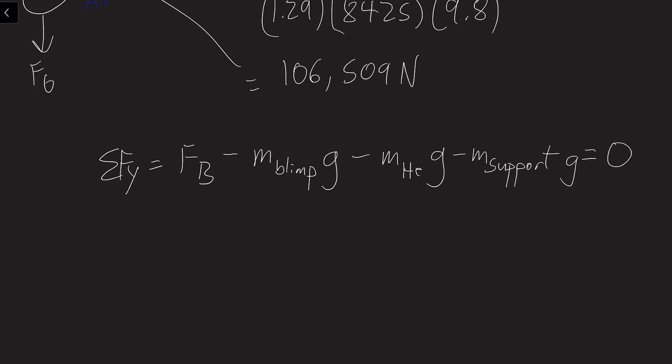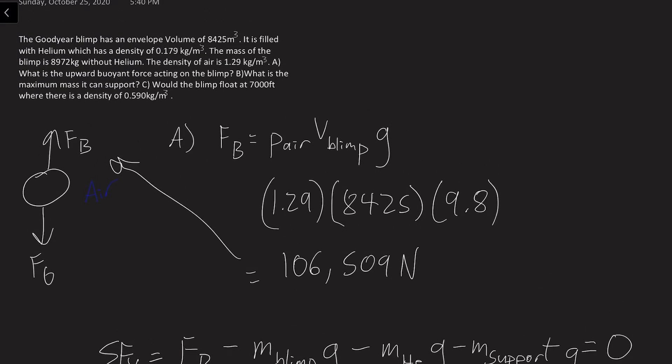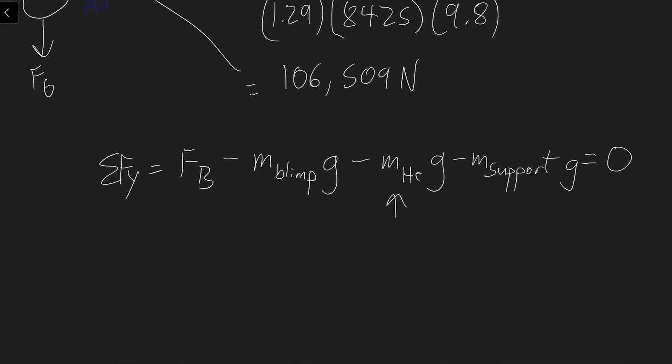So then, we don't know the mass of helium. We do not know this. It is not given in the problem up here. We can find it using the density equation. Density of helium will be equal to the mass of helium divided by the volume that the helium takes up. So that would be the same volume as the blimp. So if you solve for mass, mass equals density of helium times the volume of the blimp.